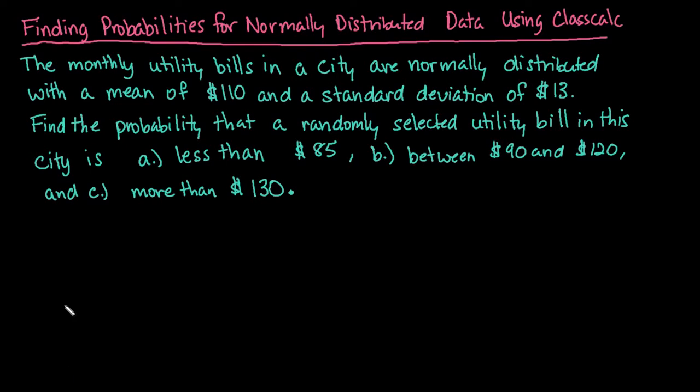So what we have here is the monthly utility bills in a city are normally distributed with a mean of 110 and a standard deviation of 13. Find the probability that a randomly selected utility bill in the city is: A, less than $85; B, between 90 and 120; and C, more than 130.